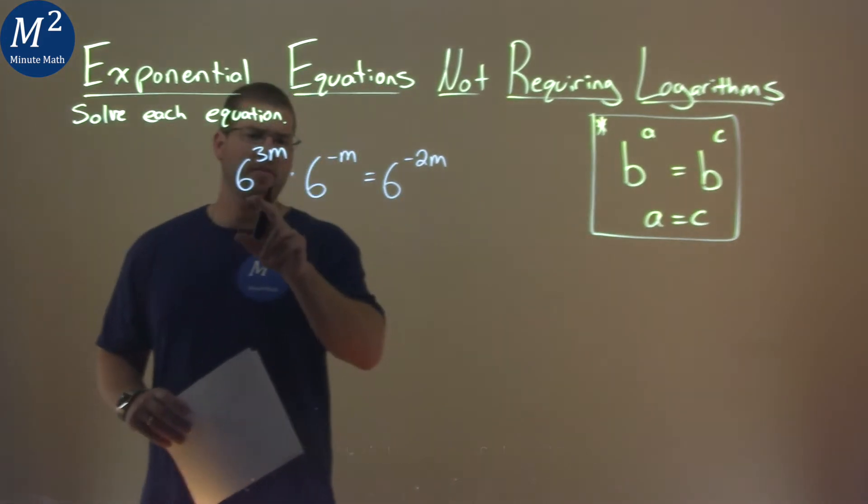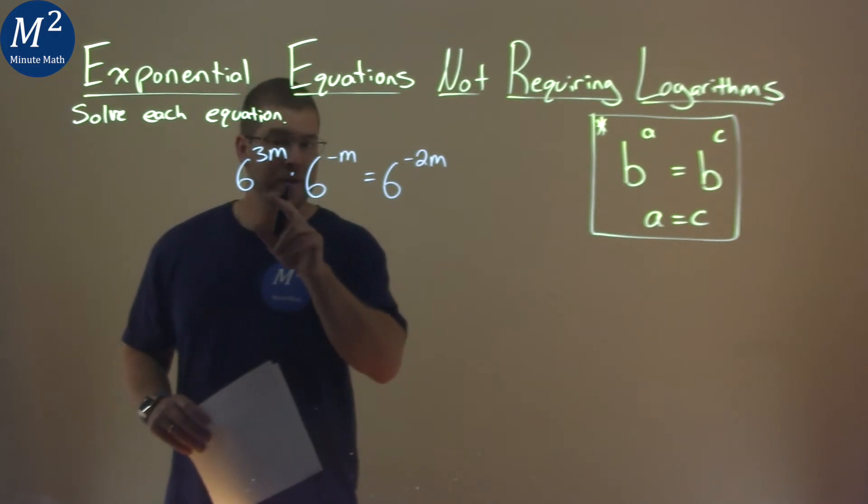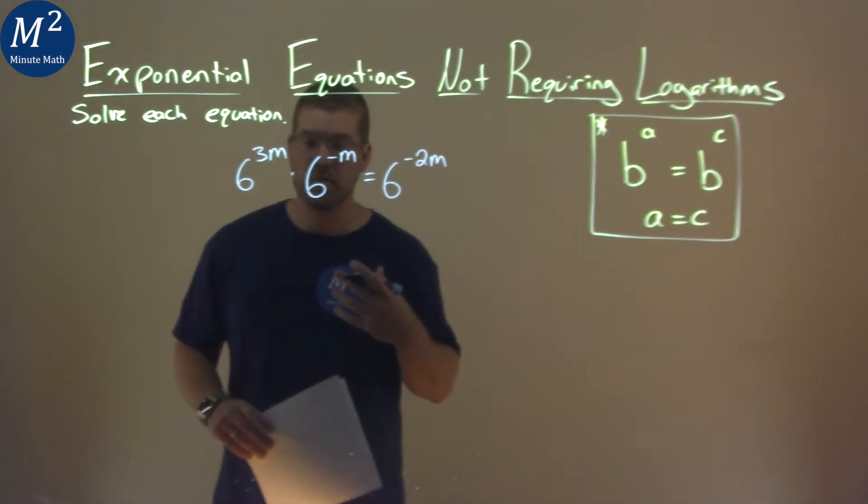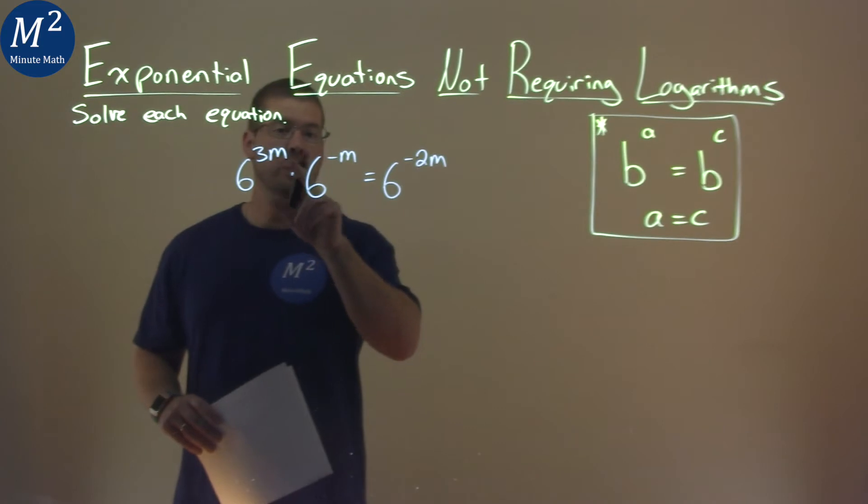What's tricky here is we have this multiplication going on, but luckily we have the same base, which is 6. When that happens, we look to the exponents.